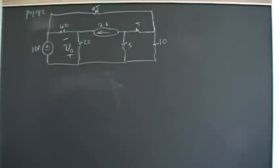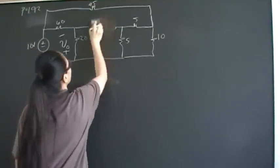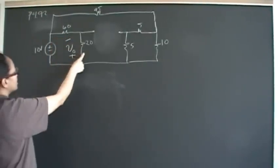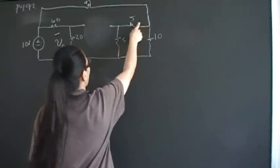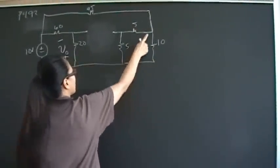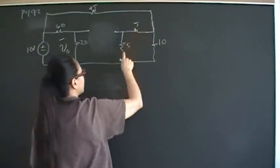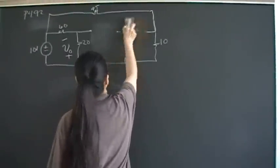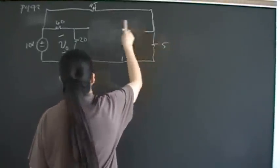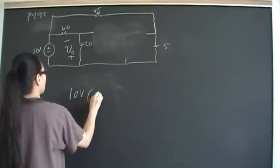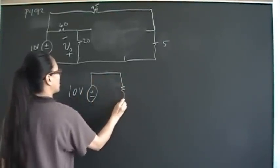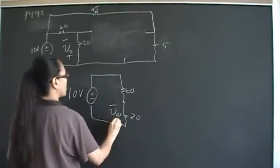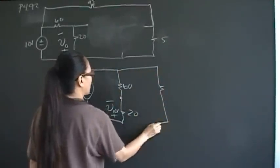First, let's look at the 10-volt source. We open up the current source, and when we do that, we can see that the 60-ohm resistor is in series with the 20-ohm. We can also see that the two 5-ohm resistors are in parallel, giving us 10 ohms. Then 10 ohms in parallel with 10 ohms gives 5 ohms. So if we redraw the circuit, we have 10 volts, with 60 and 20 in series, and we're looking for V10-volts from minus to plus, with 5 ohms at the end.